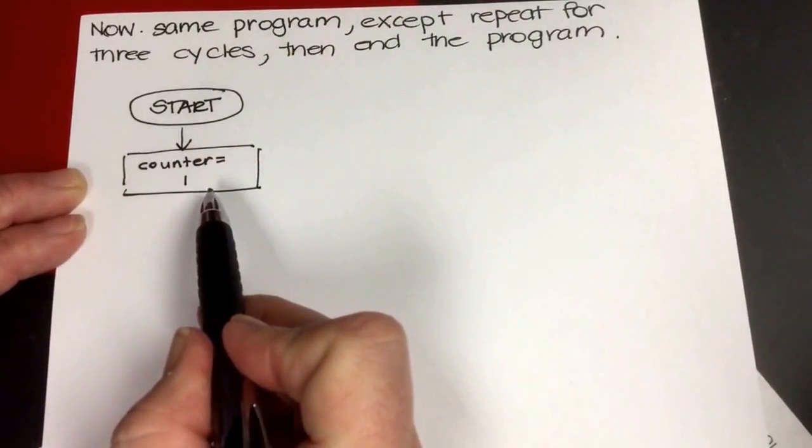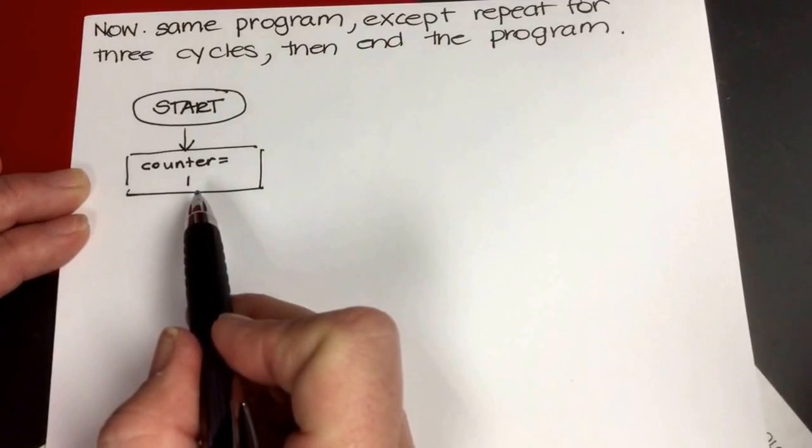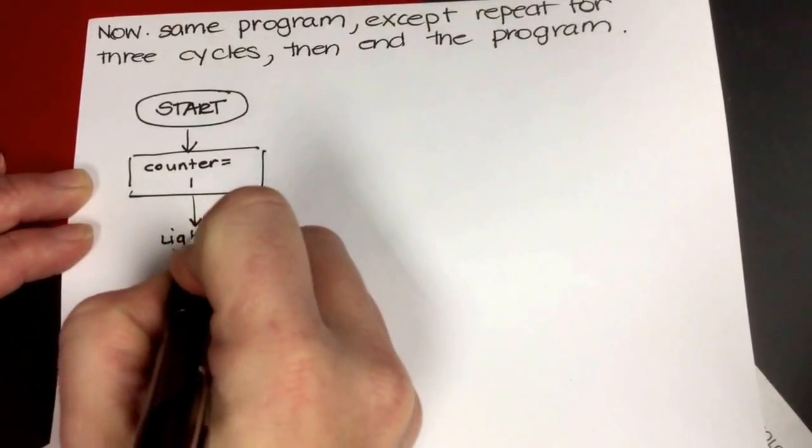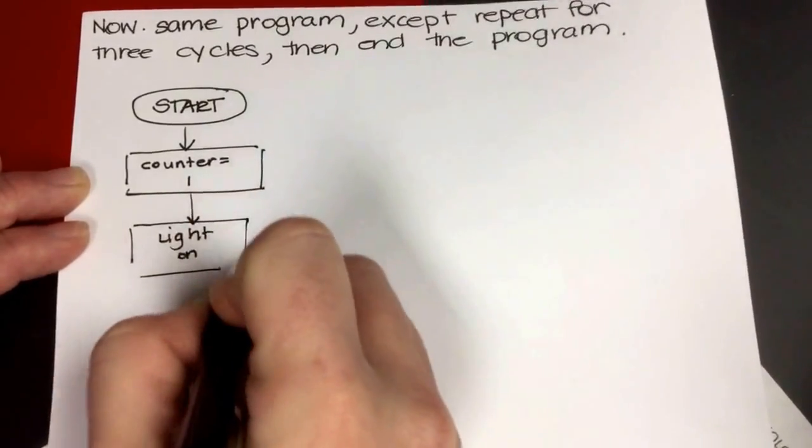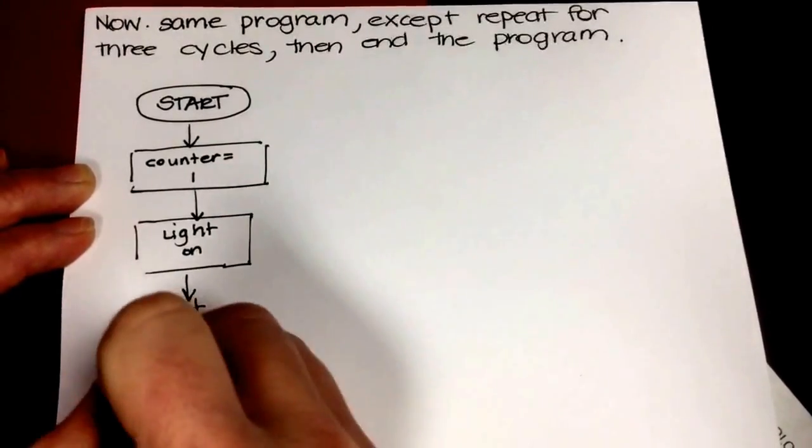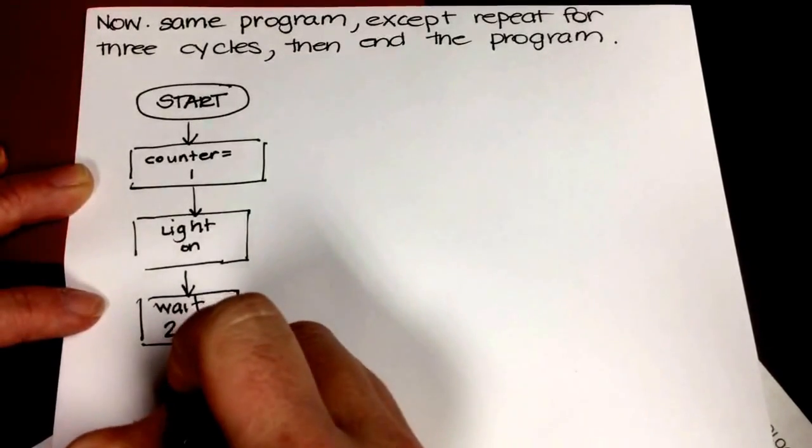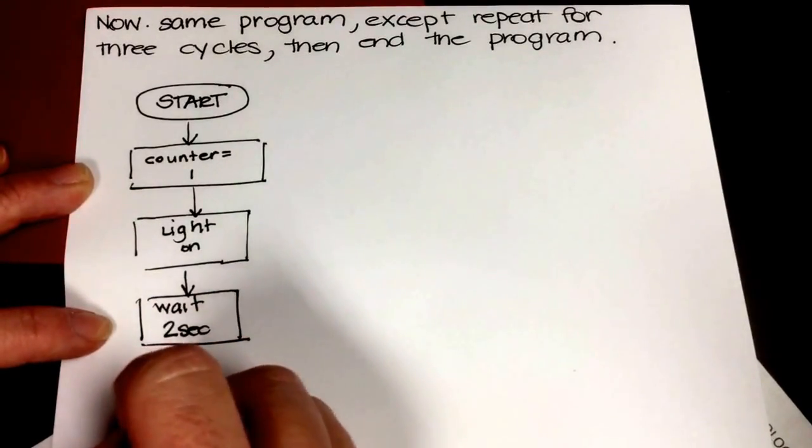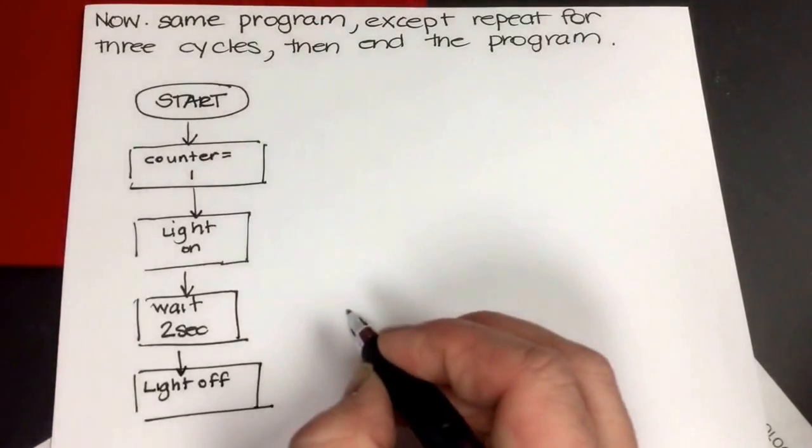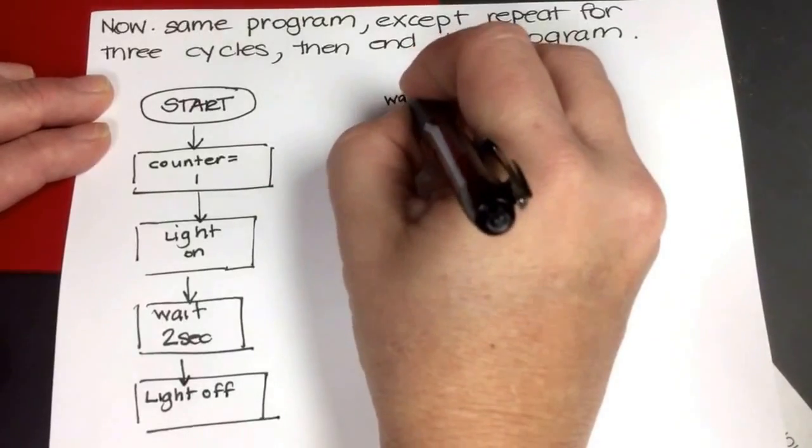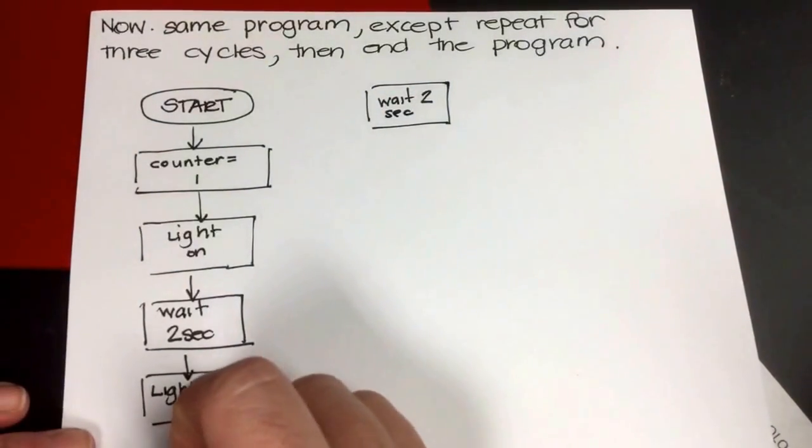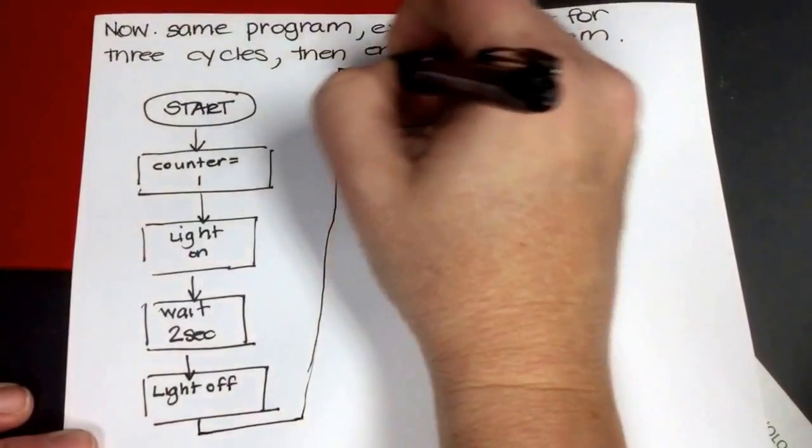And that starts my first cycle. This is a good programming habit too. In programming, we would call it initializing your variables. But this is a good programming habit to get into. And so we want to do the same process now. So we want to do light on. Then we want to wait two seconds. Then we want to do light off. And then we wanted to wait another two seconds.